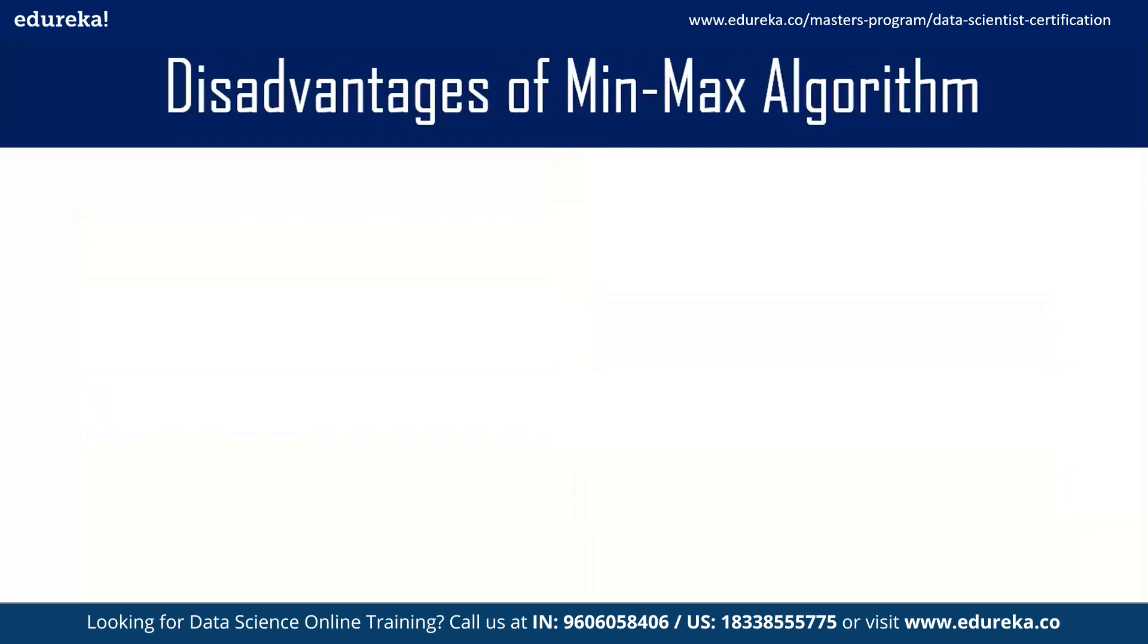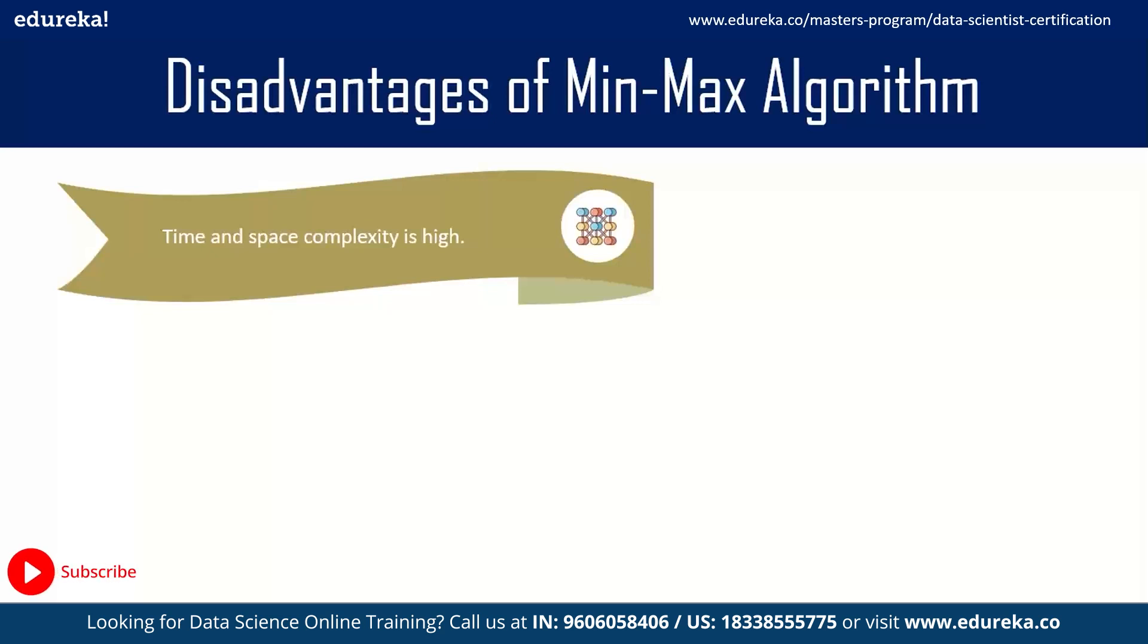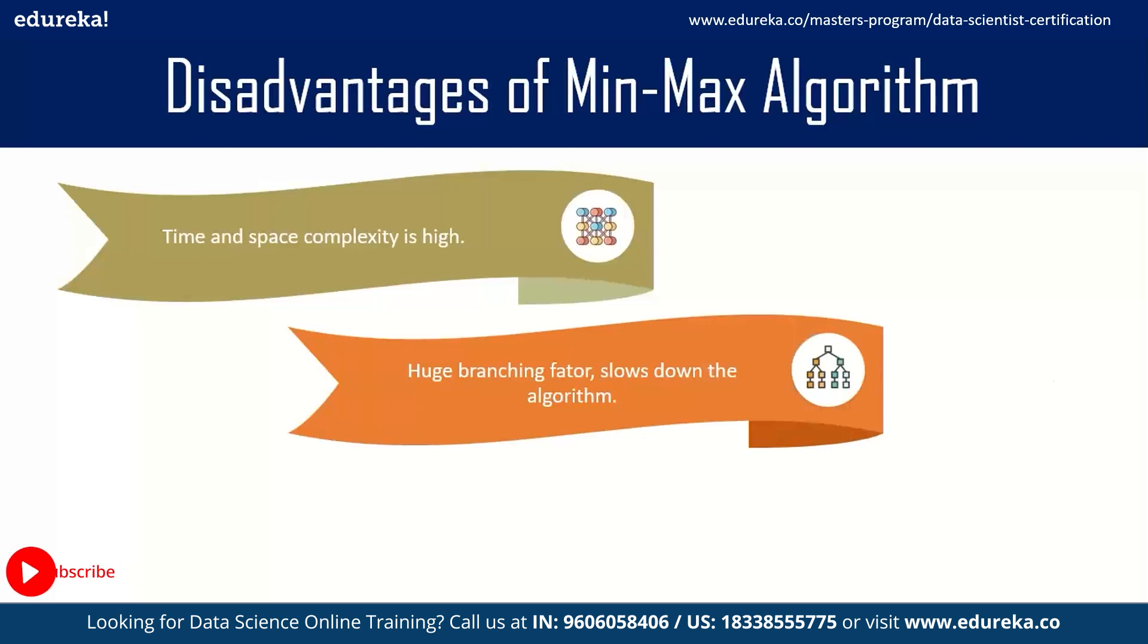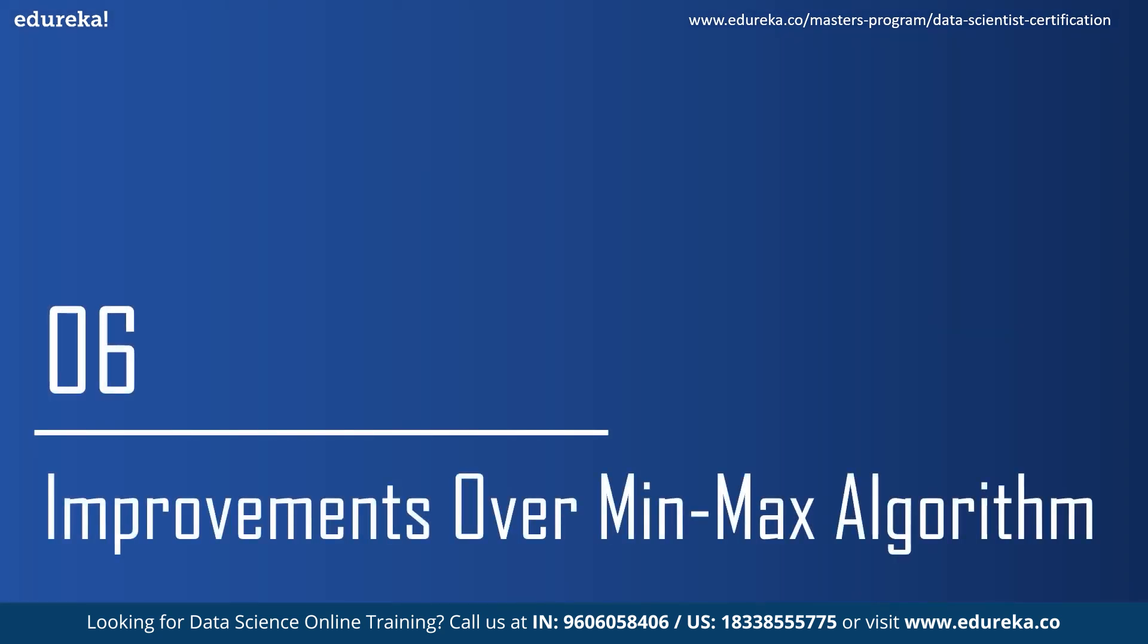Now let's move on to the disadvantages of MinMax algorithm. The first one is that it has really high time and space complexity - the time and space involved in searching the best optimal path is really high. It has got a huge branching factor and this slows down the algorithm because it goes to the depth of the tree. The depth could be really huge and the branching factor really slows it down. Another disadvantage is that the performance and efficiency is really slow due to evaluation of all the possible sub-spaces, nodes, or branches of a tree. Because of this, the time and space complexity is also high.